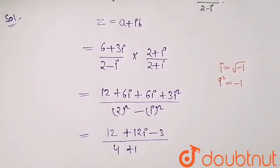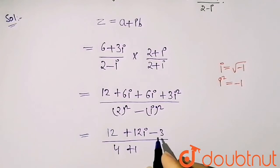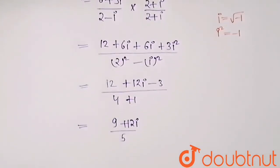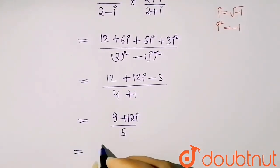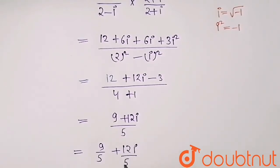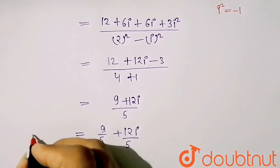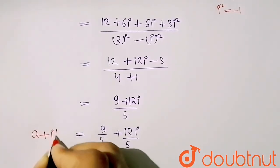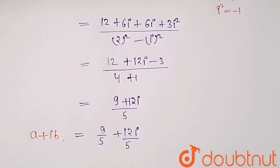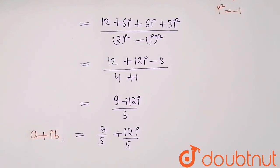So you will get 12 minus 3, this will give you 9. So (9 + 12 iota) upon 5. And you can separate it: 9 upon 5 plus 12 iota upon 5. So this equation is in the form of a plus iota b. I hope you understand the question, thank you.